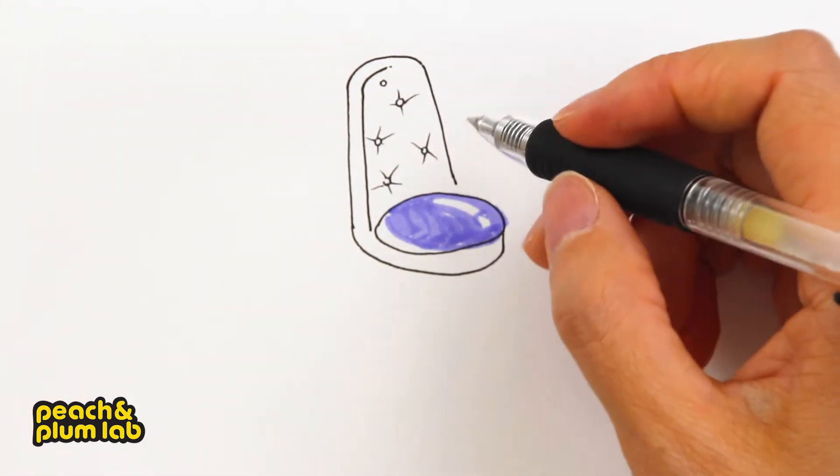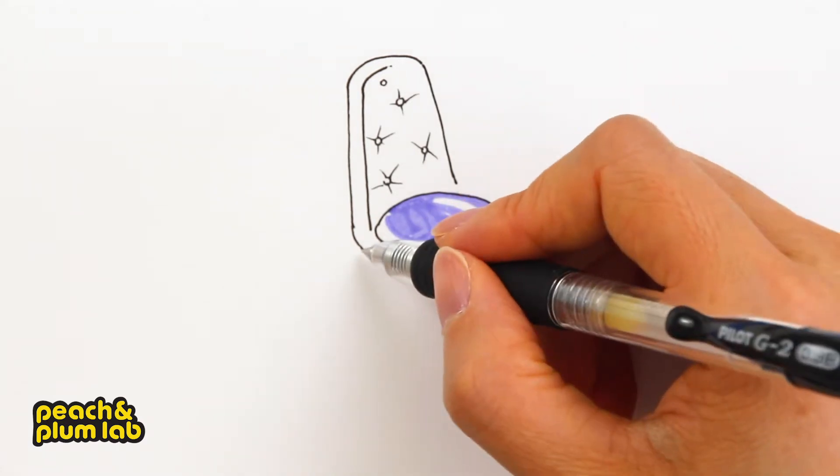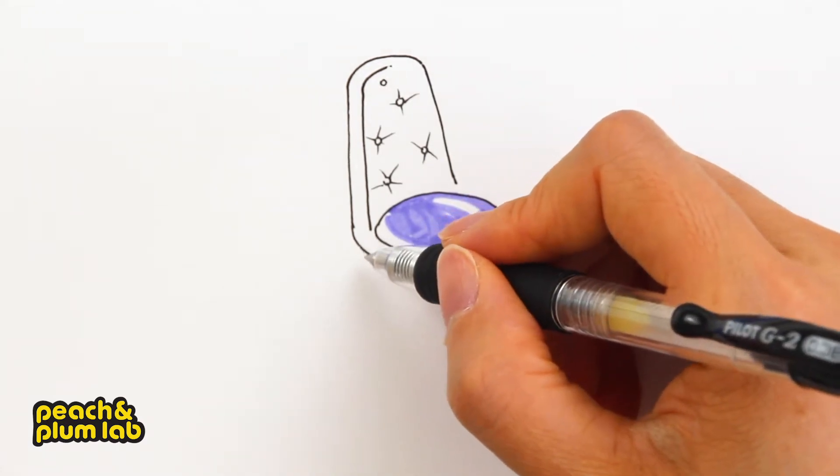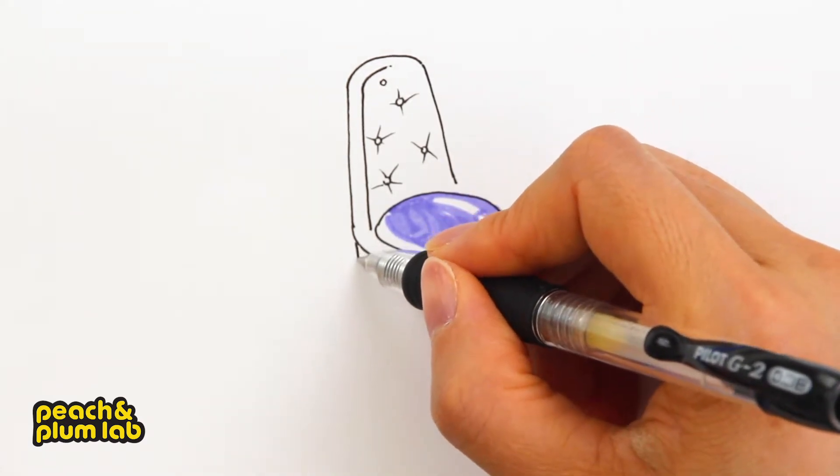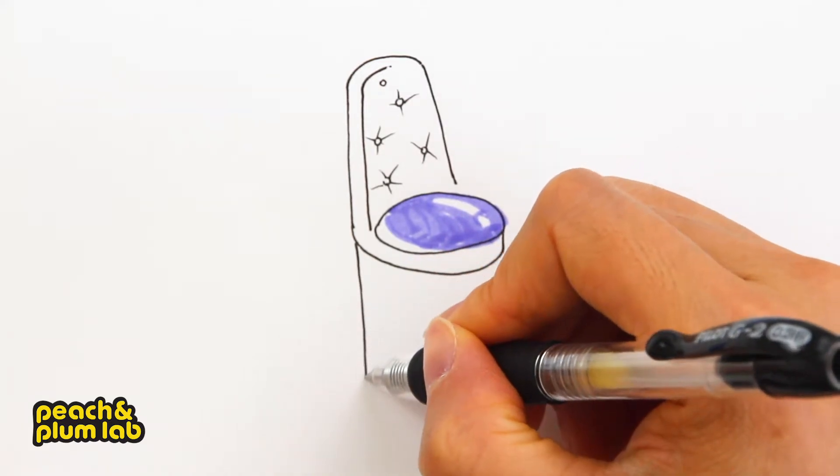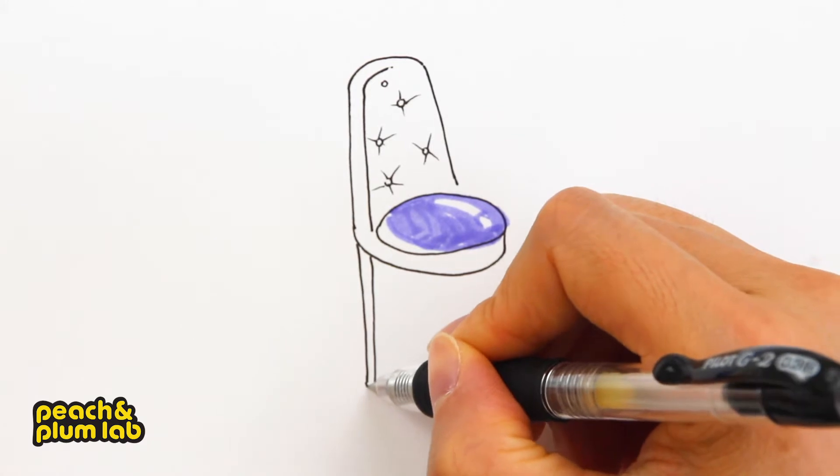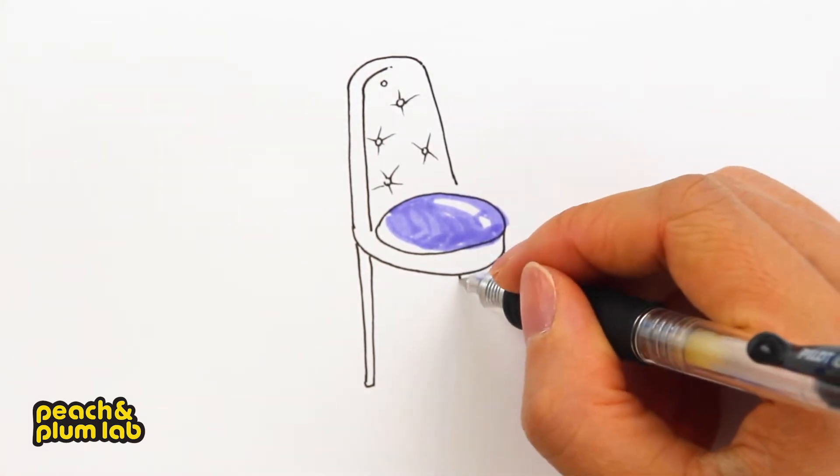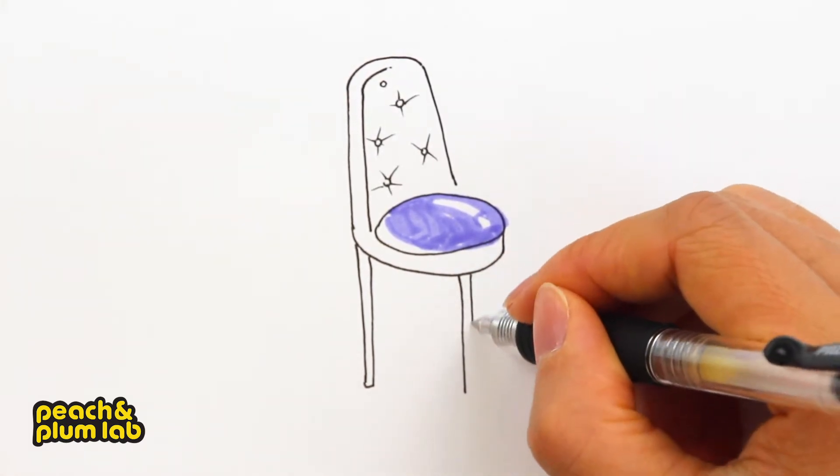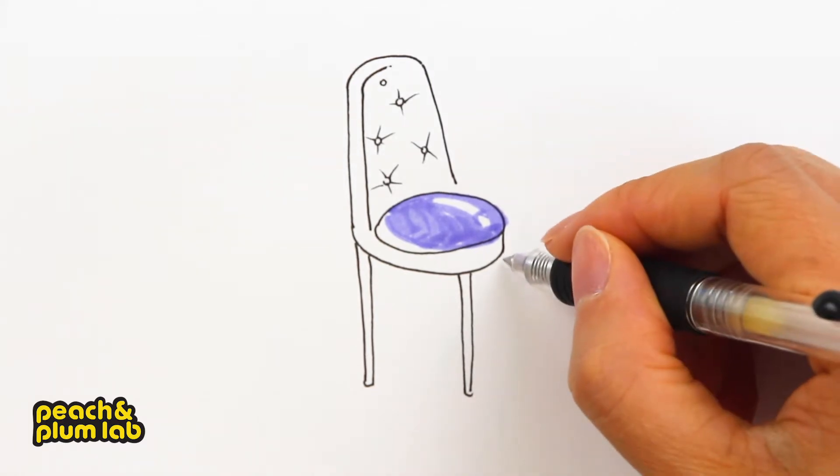First, let's draw one leg coming all the way down. Make sure it's straight. And another line and connect. And from right around here, let's draw another leg and then connect.